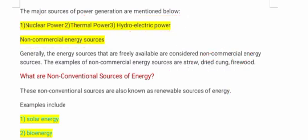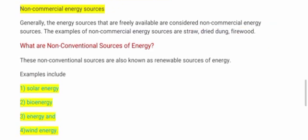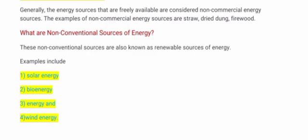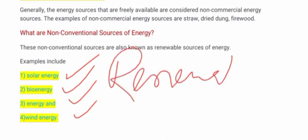Non-commercial source of energy ko hum isliye considered non-commercial bolte hain kyunki yeh freely available hoti hain. Agar inke examples dekhein toh firewood bhi hamare paas easily available hai, dry dung jo gobar hota hai woh bhi easily available hota hai, aur straw jo hamare paas hota hai woh bhi easily present hota hai. Non-conventional source of energy ke examples mein solar energy, bio energy, aur wind energy aate hain — yeh sab renewable hoti hain, yani inko hum again and again use kar sakte hain.